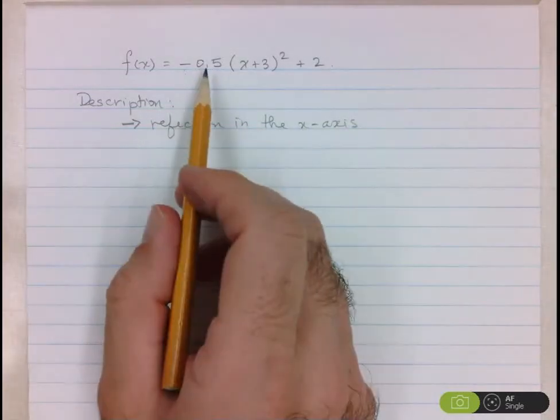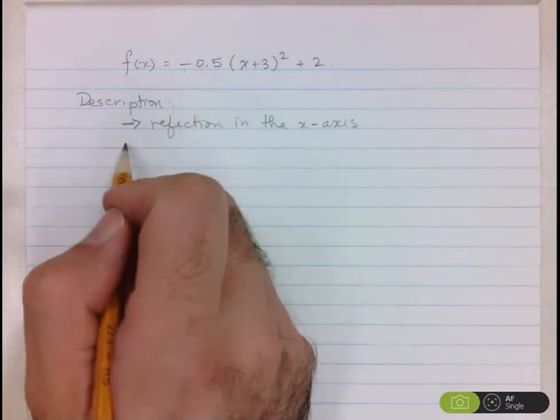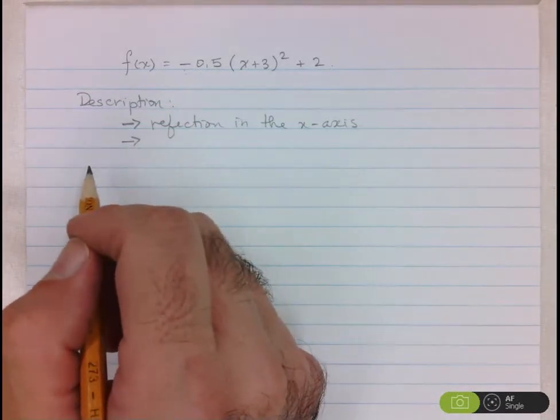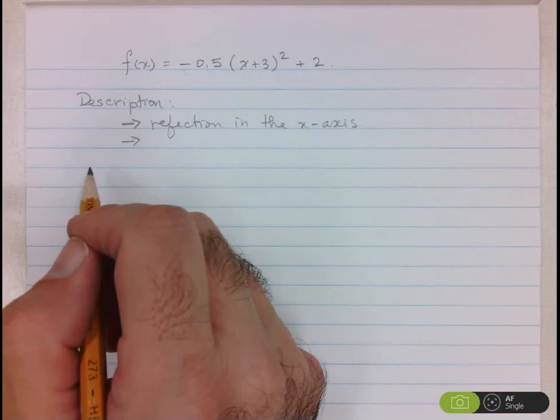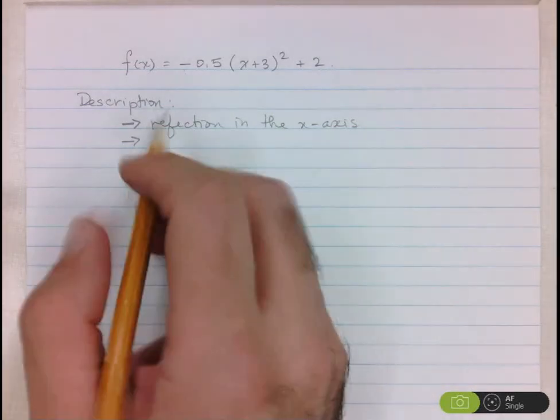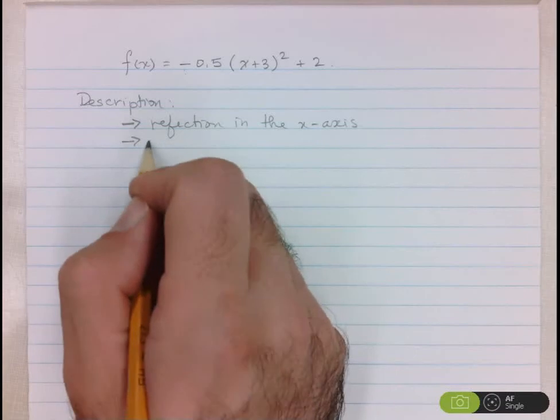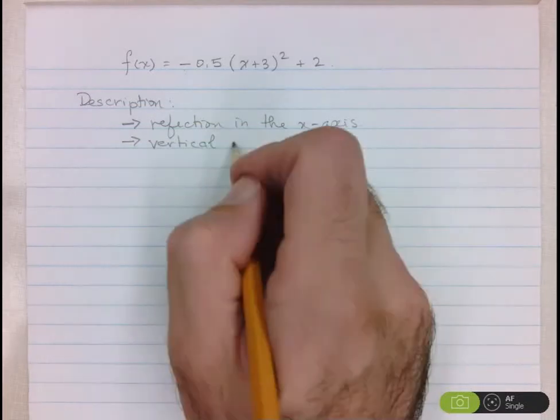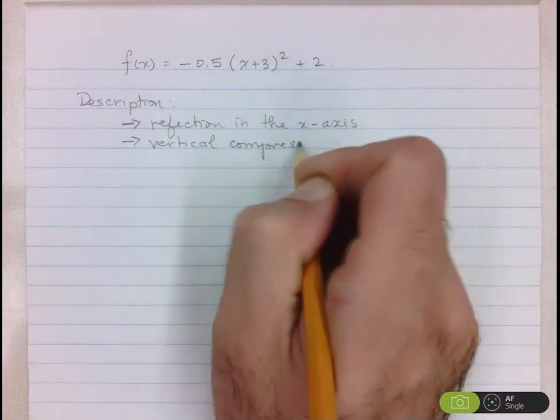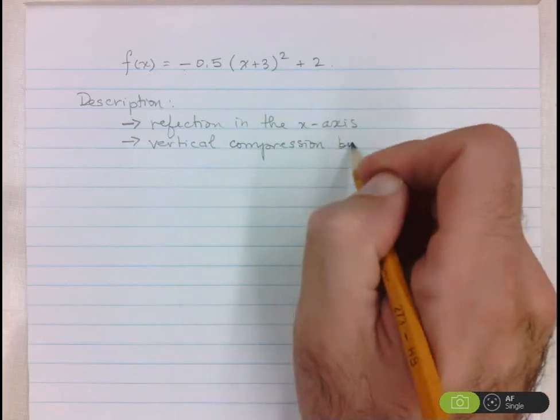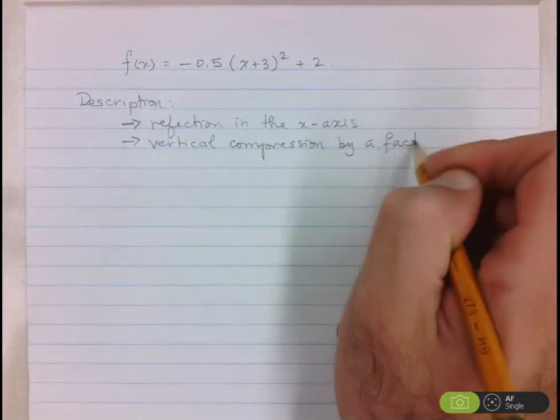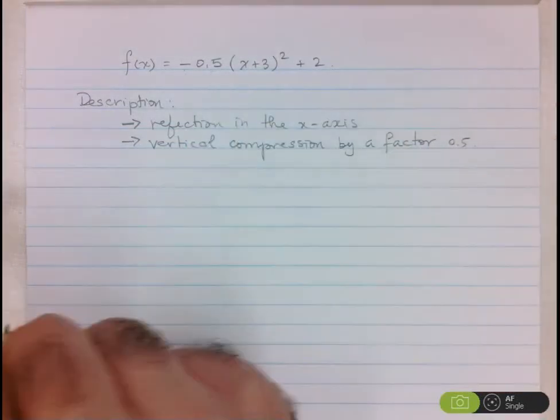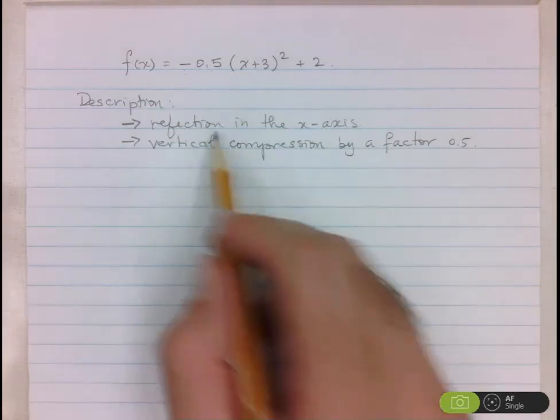Then we look at the other multiplication, this is 0.5. Now when we're multiplying by a number less than 1, what's going to happen to the y values? They are going to get smaller. It's going to make the parabola wider. So this here, we have a vertical compression. So it's like pushing down on the parabola. But I want to be specific by what factor, meaning by what do I multiply those y values? I'm going to multiply them all by 0.5. So I need to be as specific as possible. So now I've taken care of the two multiplications.